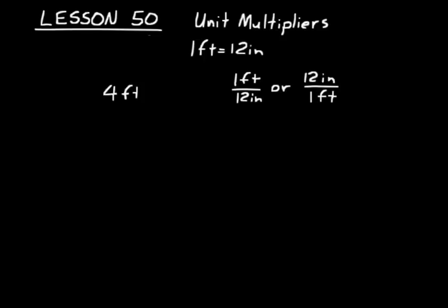Think about this: since 1 foot equals 12 inches, that fraction — 1 foot over 12 inches or 12 inches over 1 foot — really just equals 1, because you have a similar value over a similar value. Just like 5 over 5 equals 1. Even though 12 inches and 1 foot look different because the units are different, they both represent the exact same value.